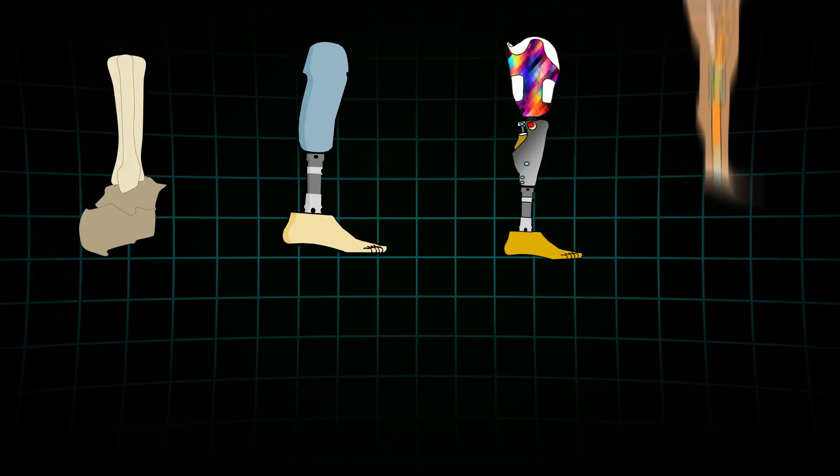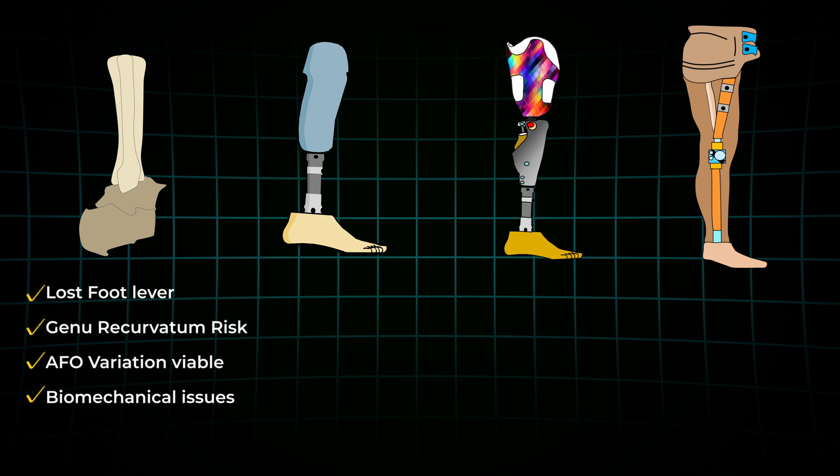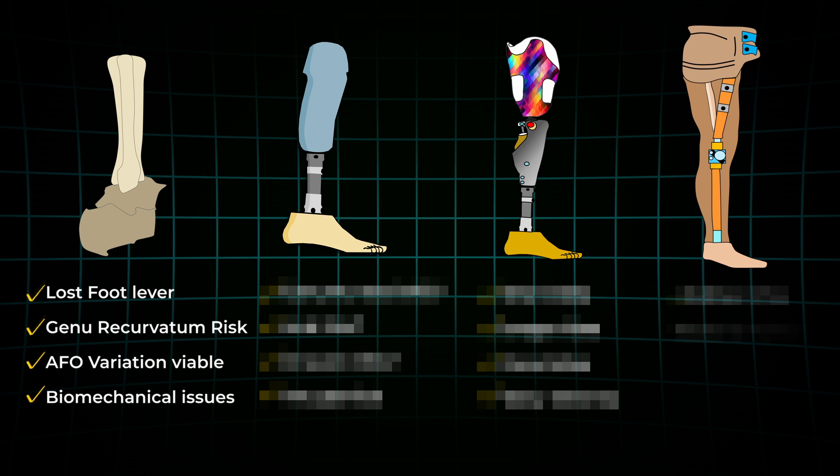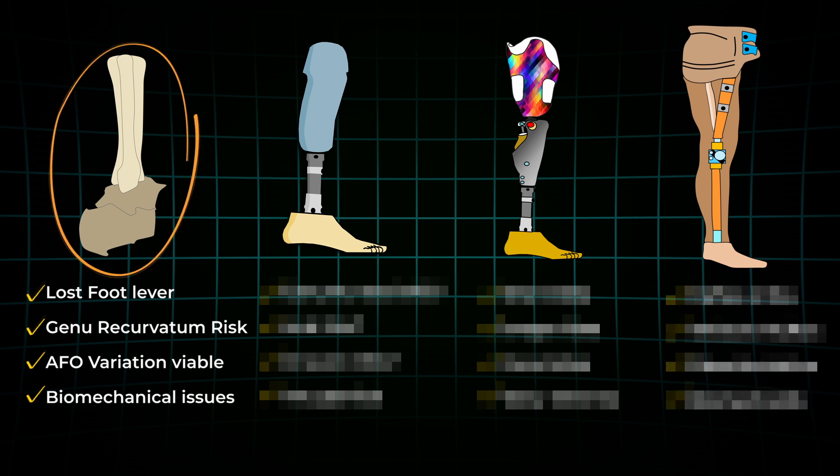Now, if we zoom in on each amputation level, we'll see that every level comes with its own characteristics. And those unique characteristics affect not just how someone walks, but also the way we design prosthetic care. Understanding these differences is crucial for everybody involved. We already looked at one unique challenge of the forefoot amputation.